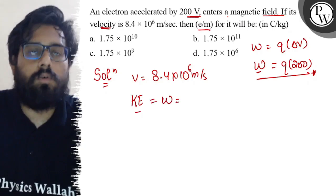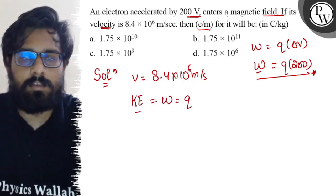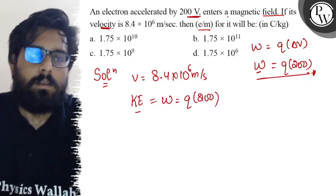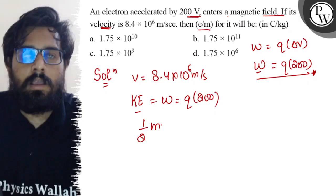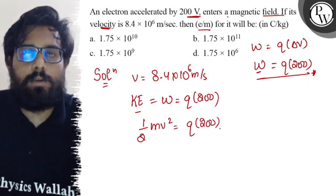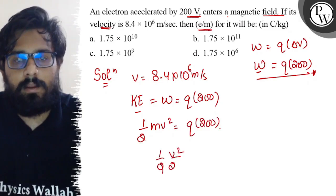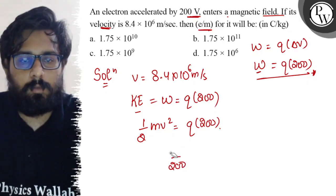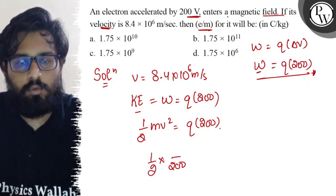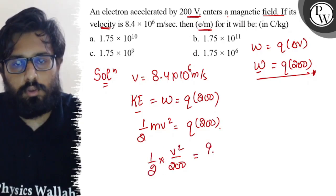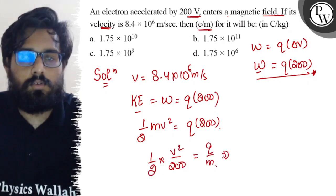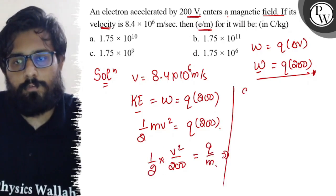And it goes to q times 200, so half mv² equals q times 200. You have to calculate the value of q/m, so half v² divided by 200. So it comes out to be half times v² divided by 200 equals q/m.